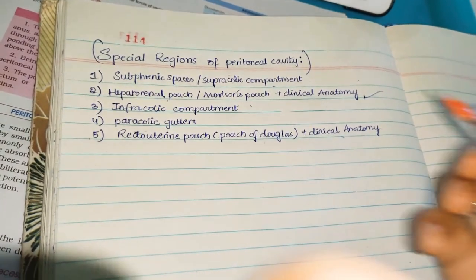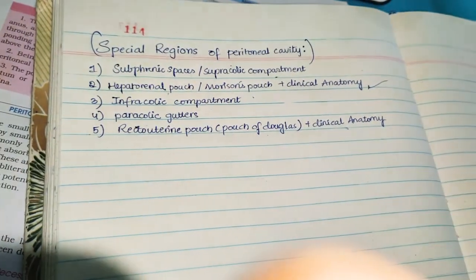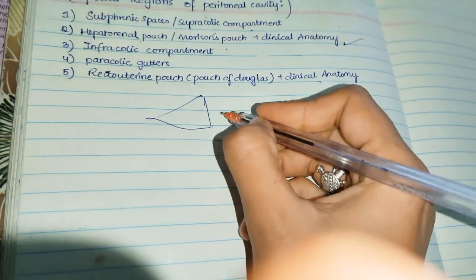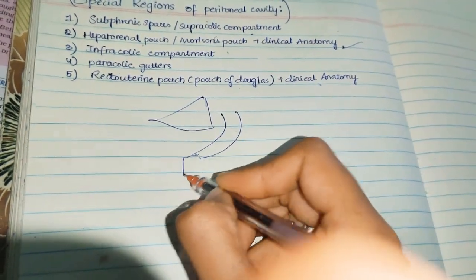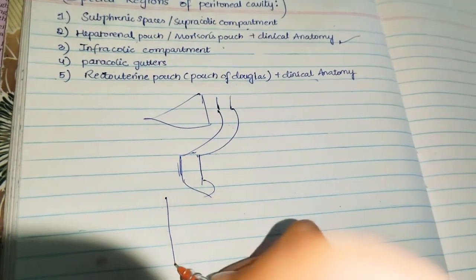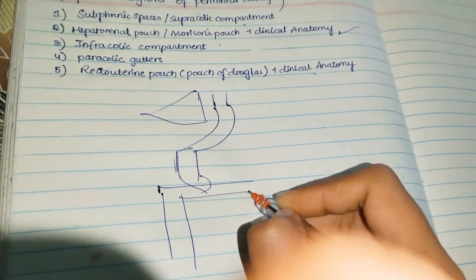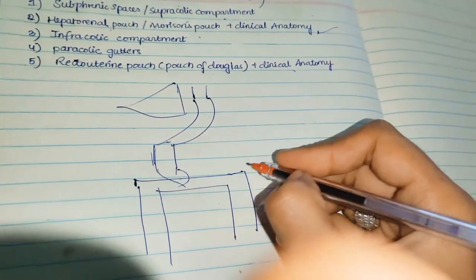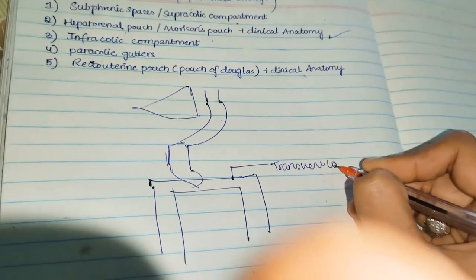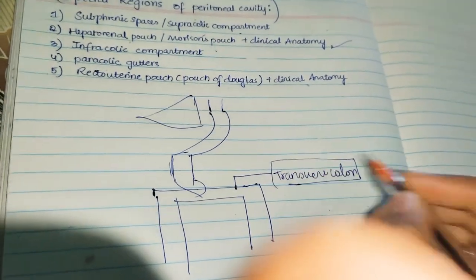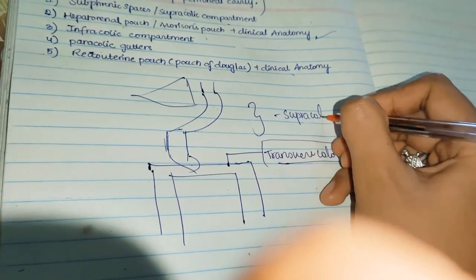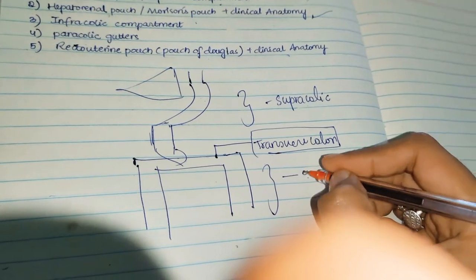Let us start with subphrenic spaces. We need to draw a diagram. You have the liver here and the stomach. This is the esophageal part of the stomach and this is the duodenum. Here comes the ascending colon, transverse colon, and descending colon. The transverse colon acts as a landmark. On the basis of the transverse colon, we divide the part above into the supracolic region and below the transverse colon into the infracolic region.